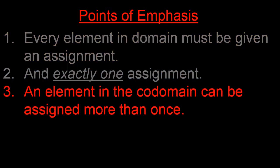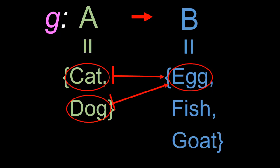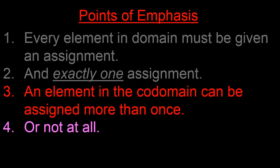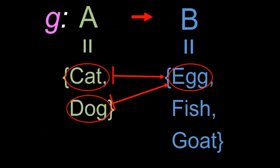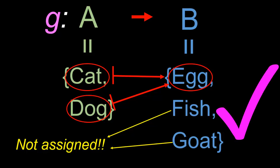Let us now move to our third point of emphasis, which is that an element in the co-domain can be assigned more than once. Earlier we gave the example of the function g, which assigned cat to egg and dog to egg also. So here the element egg in the co-domain B is actually assigned twice — there is nothing wrong with this. Our final point of emphasis is that an element in the co-domain might not even be assigned at all. Returning to function g, egg was assigned twice, while fish and goat were not assigned at all. Again, there is nothing wrong with this — there is no requirement that every element in the co-domain must be made an assignment.